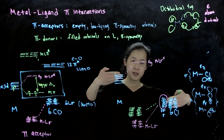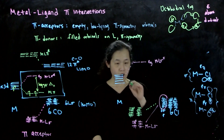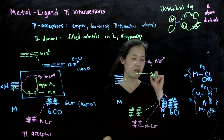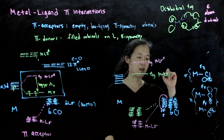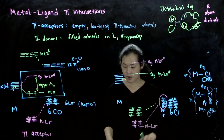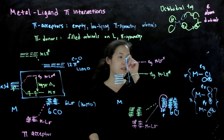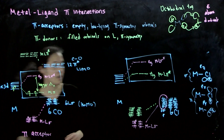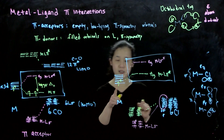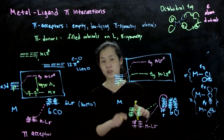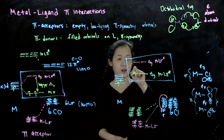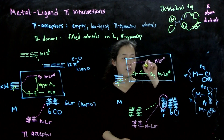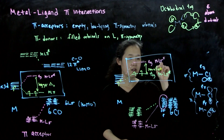Because the ligand orbitals went down, the d orbitals of pi symmetry — our t2g — went up. So now they're metal-ligand pi star. This is our final d-splitting diagram. If we had a d2 configuration, all these ligand-based orbitals down here are filled, so we have to start filling at the t2g, which has gone up. As a result, we have a smaller delta O.